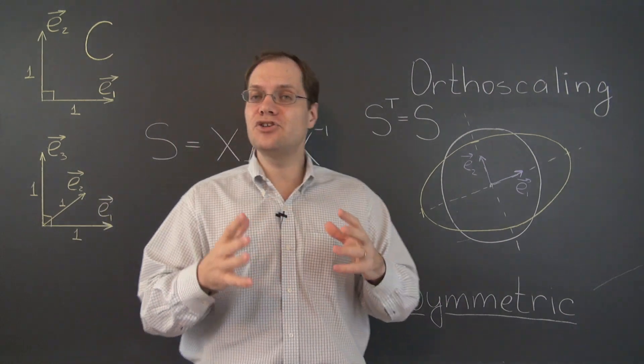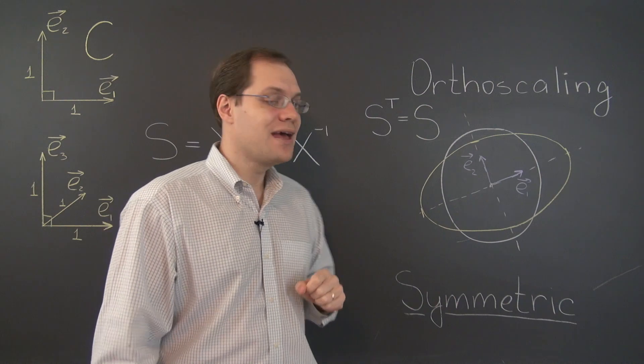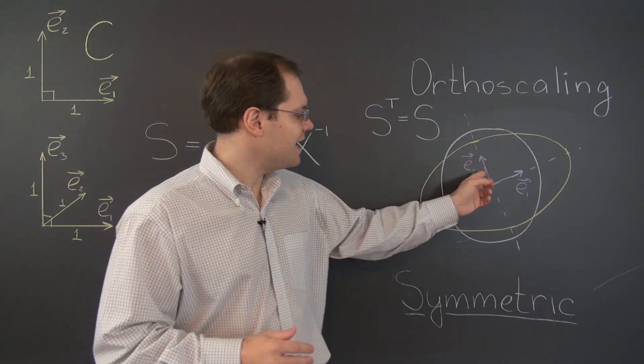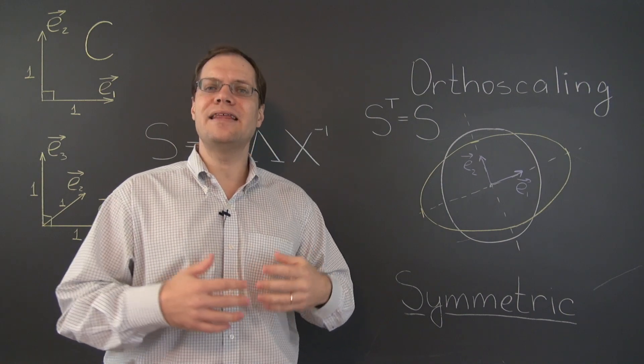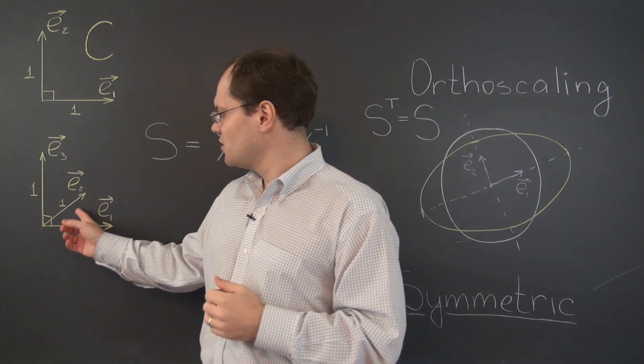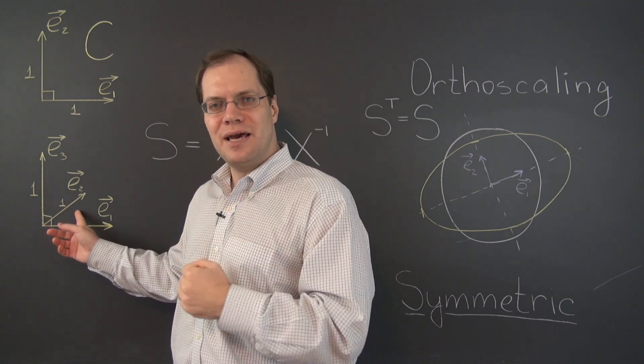So, for that to be true, we need two things, that the basis needs to be orthogonal and, excuse me, that the eigenvectors, the two vectors need to be orthogonal and that we're decomposing those vectors with respect to an orthonormal, in other words, Cartesian basis.